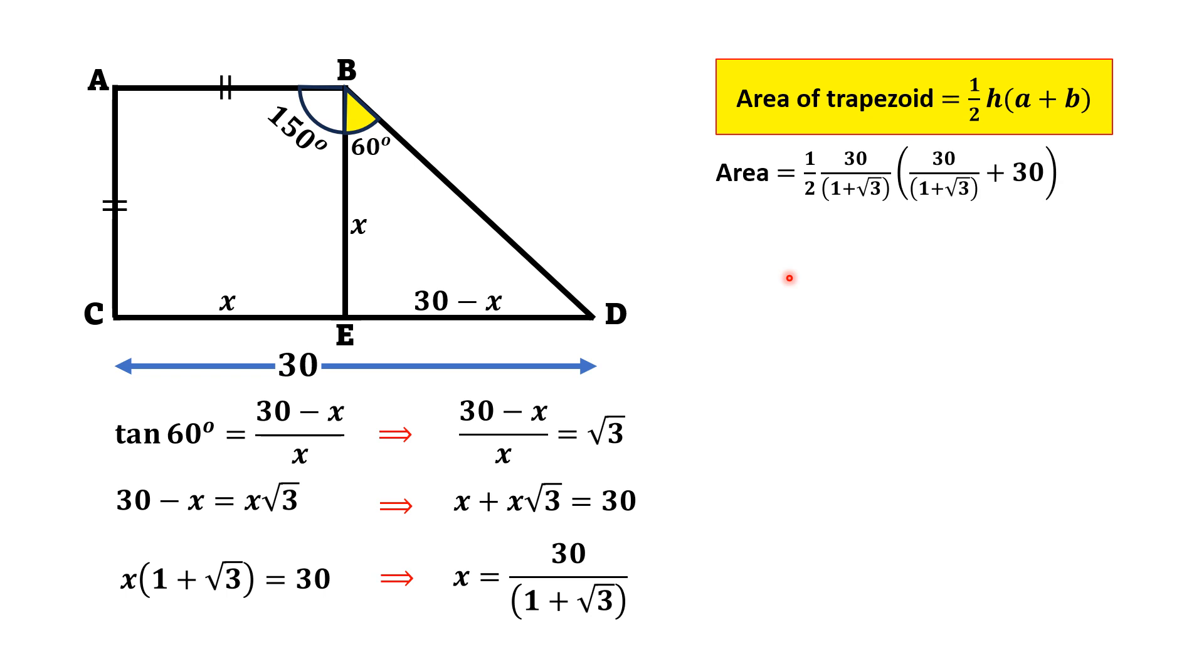Substituting these values, we will get 1/2 times 30/(1 + √3) times [30/(1 + √3) + 30]. So this 2 and this 30 will cancel out and we will get 15 in the numerator, and taking 30 common, we will get 15 multiplied by 30/(1 + √3).